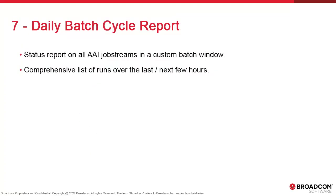The batch cycle report is a comprehensive list of completed job stream runs in a narrow window of time. It uses AAI data and job streams. You're reporting on all of AAI's run data, save for the past 24 hours, irrespective of job, agents, or other filters, to establish the relative performance of operations as reflected in AAI.